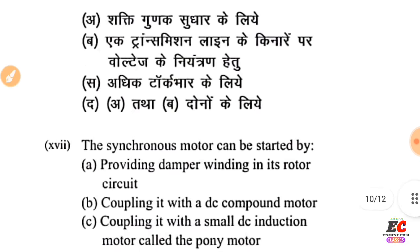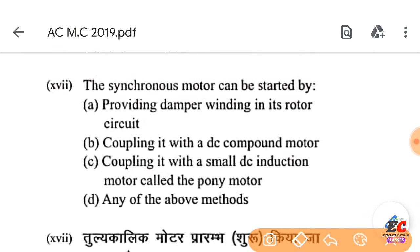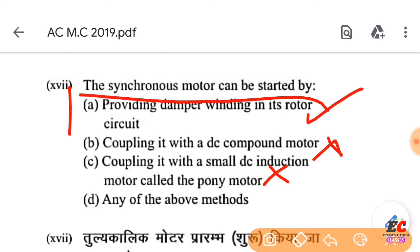Question number 17: A synchronous motor can be started by providing damper winding in the rotor circuit, or by coupling it with a DC compound motor, or by coupling it with a small DC induction motor called the pony motor. The right option is E — all of the above.